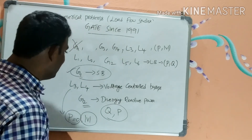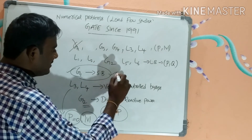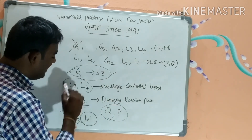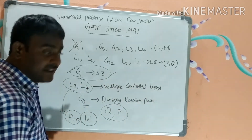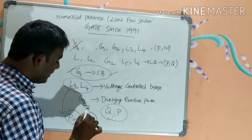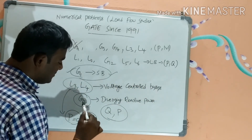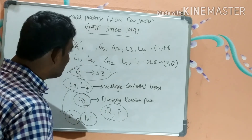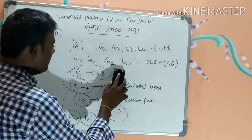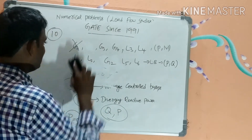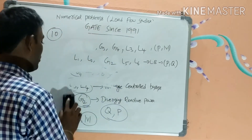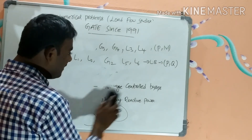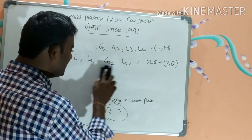Considering all conditions — G1 as slack bus, L3 and L4 as voltage-controlled (PV-type) buses, and G2 as a PQ bus — the finalized PV buses are G3, G4, L3, L4 (4 buses), and the finalized PQ buses are G2, L1, L2, L5, L6 (5 buses). The number of equations depends on these counts.